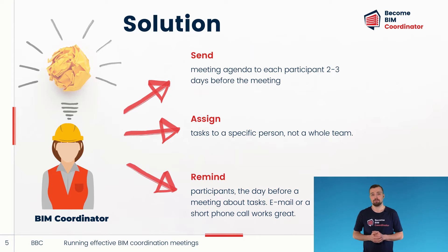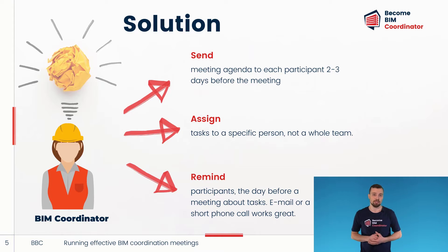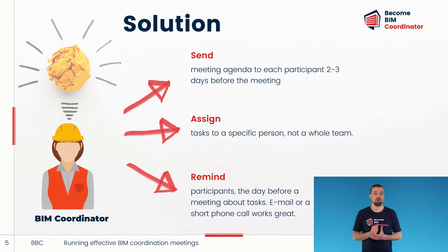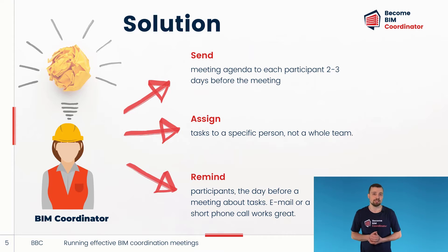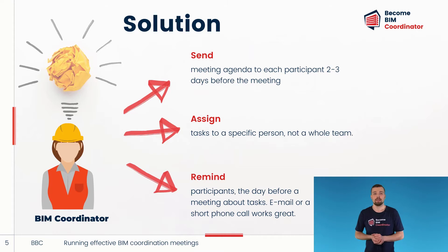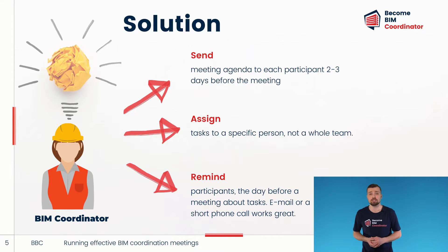Here's an important tip: don't assign tasks to the entire department, but rather to a specific person. For example, if you need the structural engineering team to prepare something for the meeting, appoint a specific person from that team to do it. This way, there can be no excuses like, 'I didn't know that I had to do it.' Another good practice is that the BIM coordinator calls or sends an email to that person the day before the meeting with a reminder of what you want them to prepare. It doesn't have to be a big deal — a short email or a two-minute conversation works wonders.